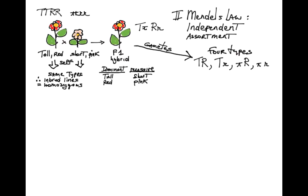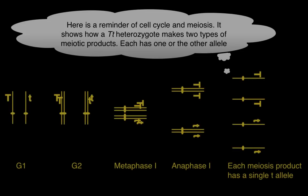A common mistake is to put two T's or two R's in the same gamete. This obviously violates Mendel's first law and makes no sense when considering the mechanics of meiosis.